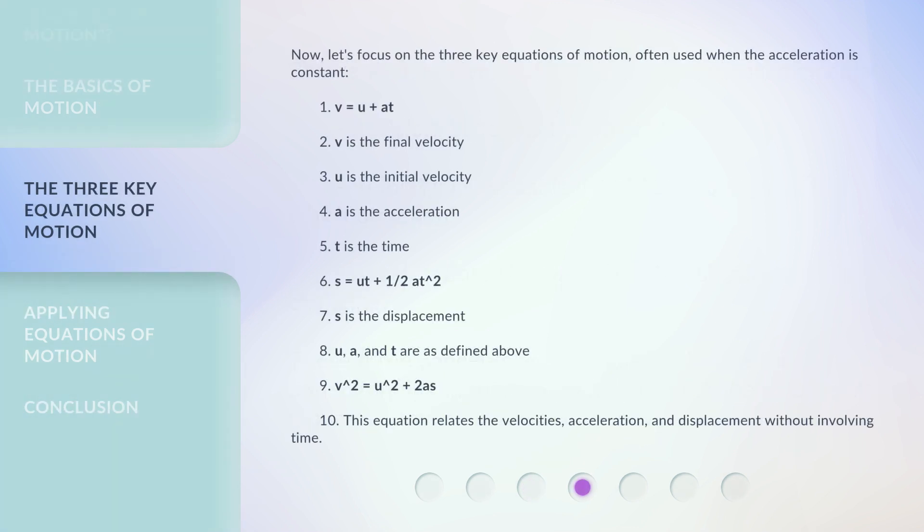Now, let's focus on the three key equations of motion, often used when the acceleration is constant. V equals U plus at. V is the final velocity. U is the initial velocity. A is the acceleration. T is the time.